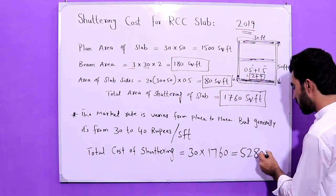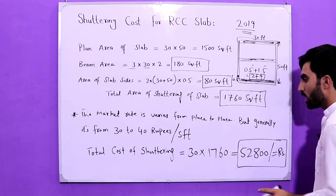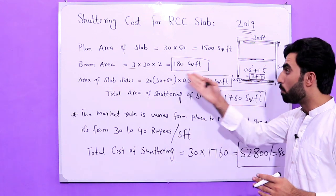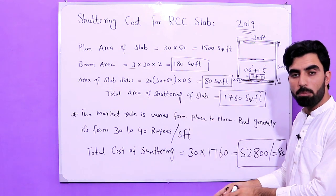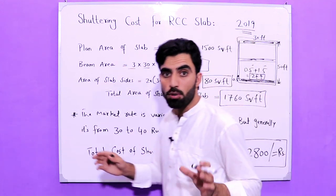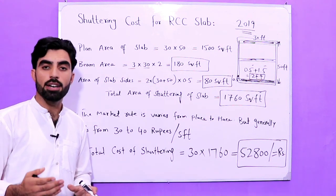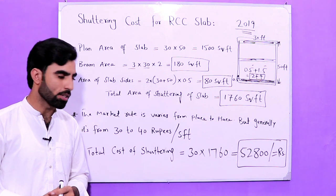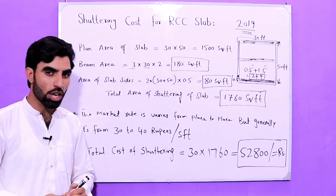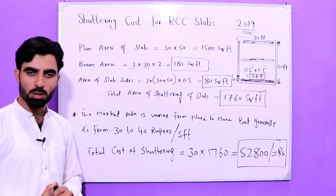So guys, this is the method by which you can find the total area of slab and beam shuttering. If beams are included in the plan, this is the way to find the total area of shuttering. Find the rate of shuttering per square feet, multiply with the total area, and you can easily find the total cost of shuttering for RCC slab. This is a short but very helpful video. If you have any questions, comment below and I'll try to reply. Thanks for watching, see you in the next video, goodbye.